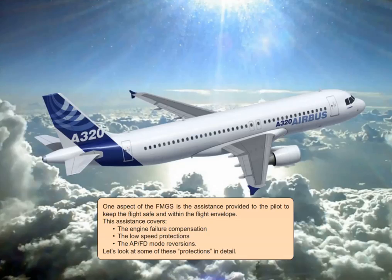One aspect of the FMGS is the assistance provided to the pilot to keep the flight safe and within the flight envelope. This assistance covers the engine failure compensation, the low speed protections, and the autopilot flight director mode reversions. Let's look at some of these protections in detail.